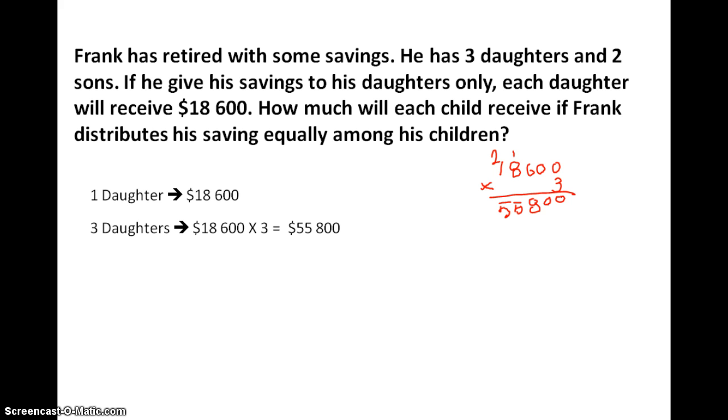So now we know Frank has a total saving of $55,800. We will need to find out how much would each of his child receive if he decided to distribute them equally. So Frank has 5 children. So we need to use $55,800 divided by 5.